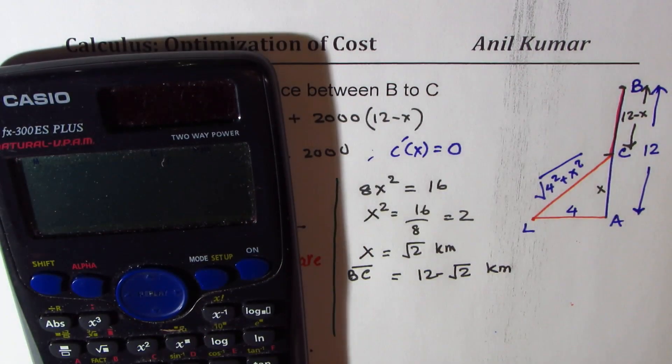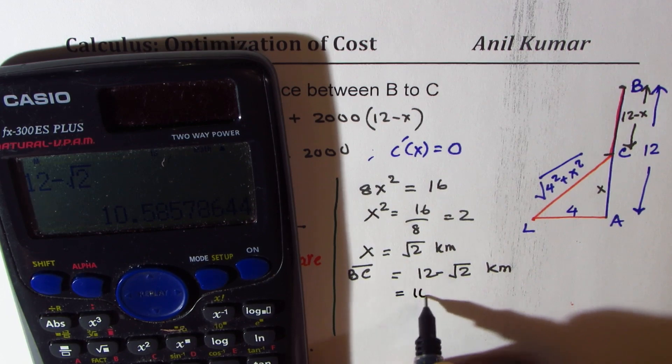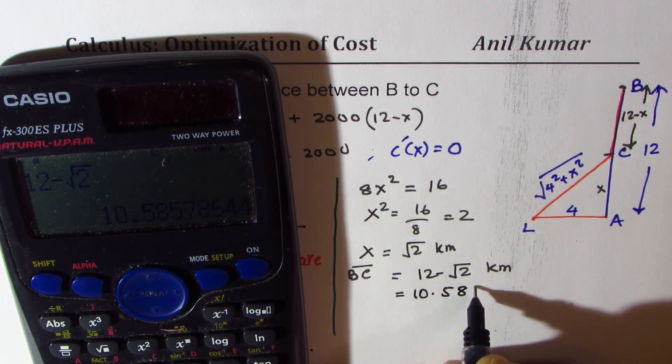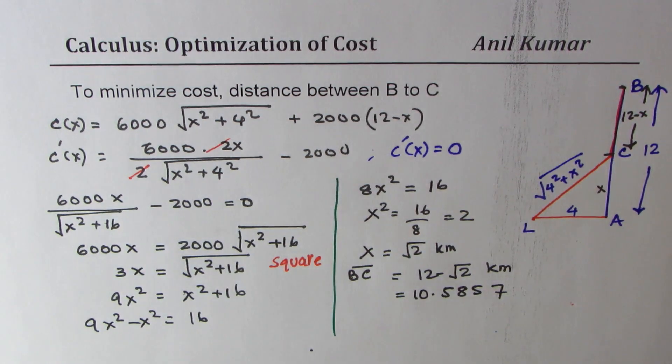So we get 12 minus square root of 2, which equals in decimals 10.5857. That is kilometers. Rounding to meters, we get 10,586 meters.